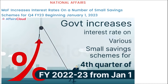The Ministry of Finance (MoF) has increased interest rates on a number of small savings schemes for the fourth quarter of fiscal year 2023, beginning 1st January 2023. The rates on various instruments have increased by 20 to 110 basis points, now in the range of 4% to 7.6%. Schemes affected include the Post Office Time Deposit, Kisan Vikas Patra, Senior Citizen Saving Scheme, Monthly Income Saving Scheme, and National Savings Certificate. However, interest rates on PPF, Sukanya Samridhi Account, and savings deposits have remained unchanged.